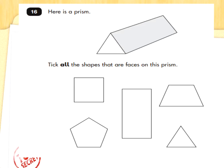Here is a triangular prism. Tick all the shapes that are faces on this prism — don't let this trick you. The front face is a triangle. Look at the side of the prism and tilt your head — it's a four-sided shape: two sides are short and two sides are long. The shape options may have been turned another way, don't let it trick you. I can see a rectangle there. Well done if you got both of those.